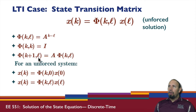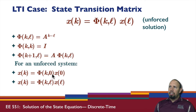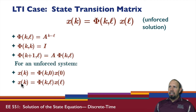Another property: the state transition matrix from l to k plus 1 equals A times the state transition matrix from l to k. For an unforced system starting at initial condition zero, we use the state transition matrix from zero to k. If we start at time l, we use the state transition matrix phi(k, l) to give us that transition.